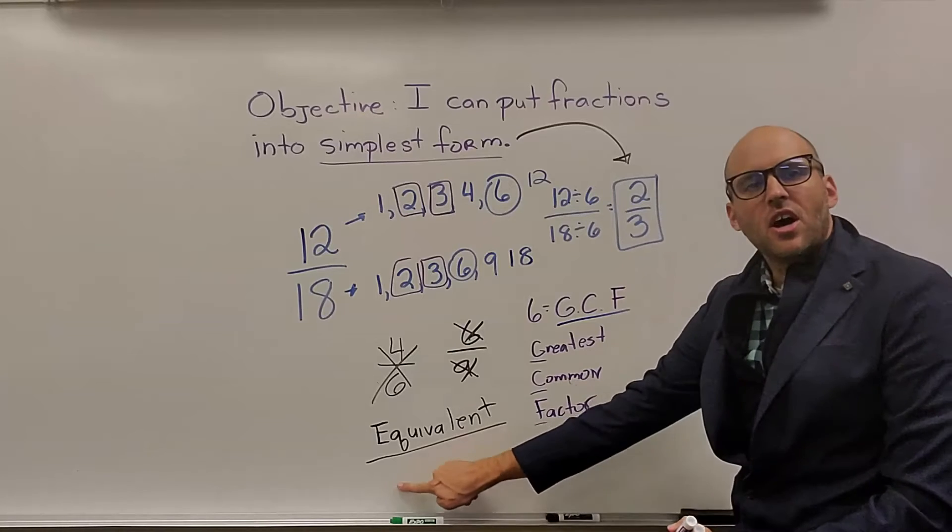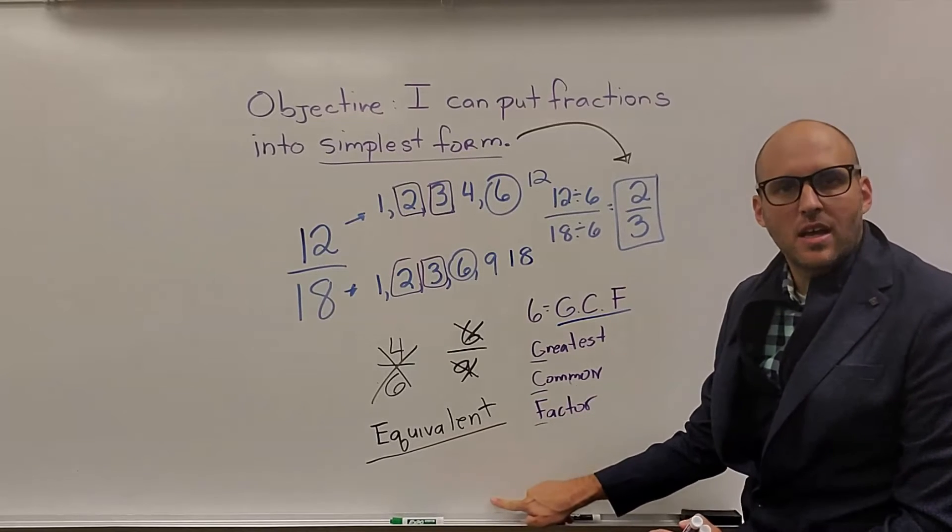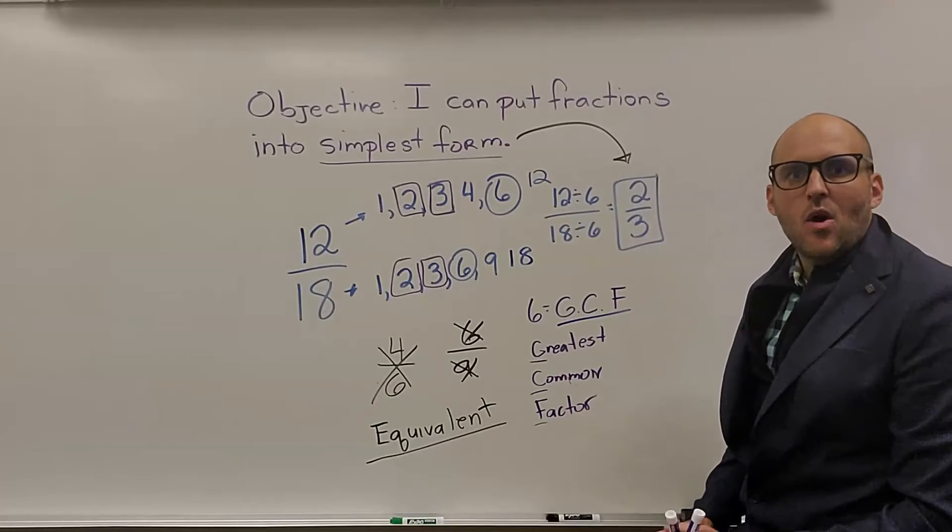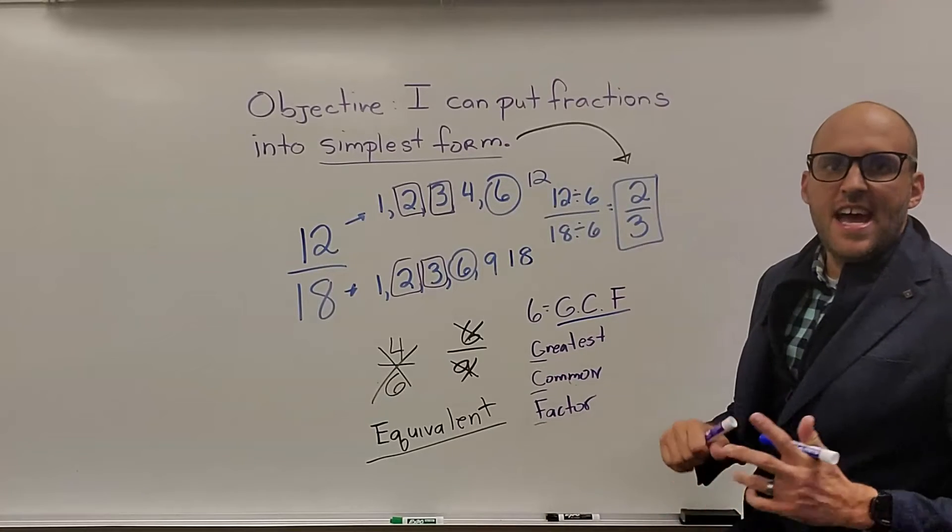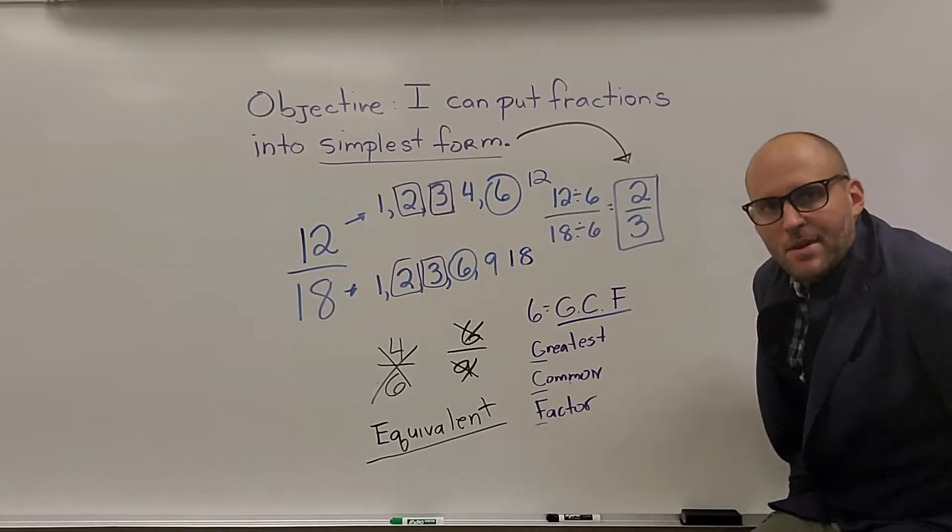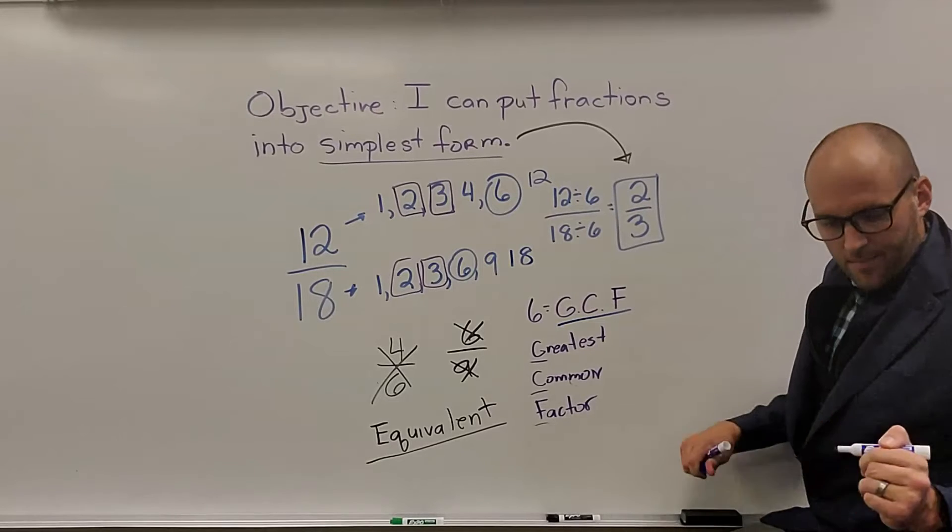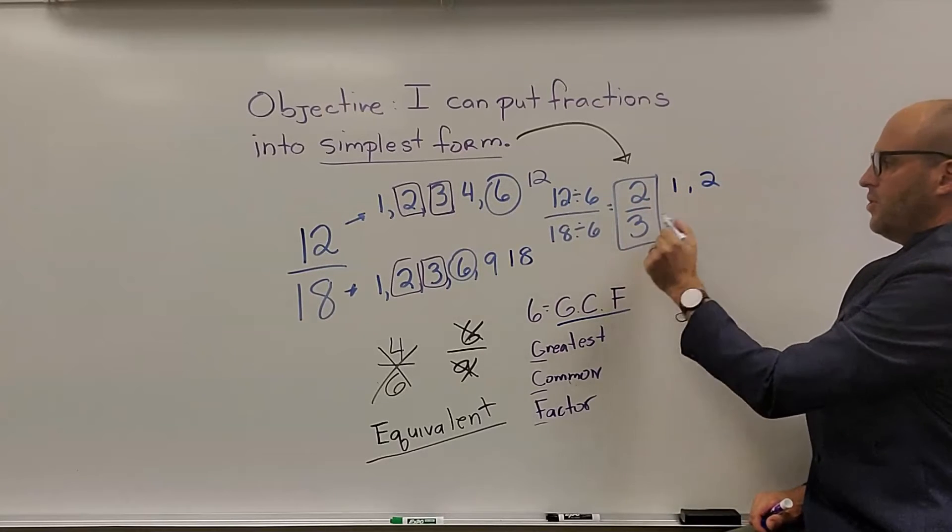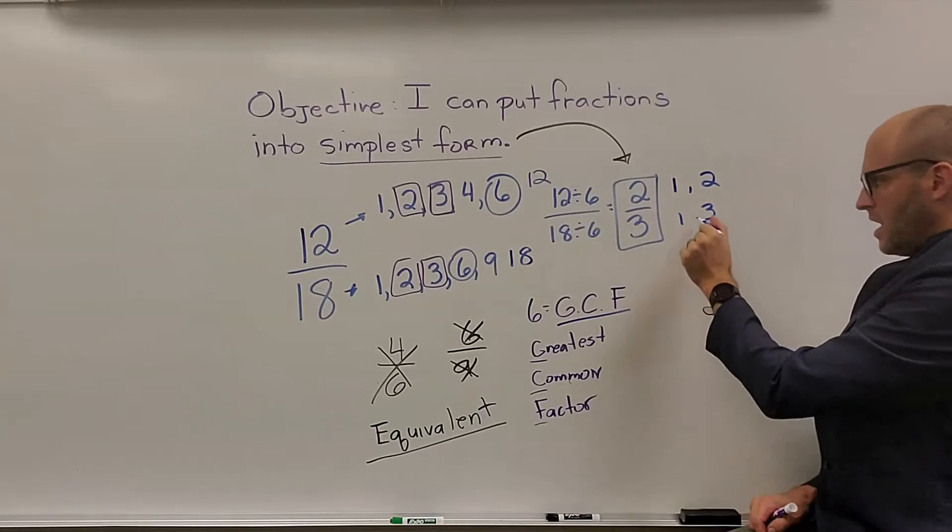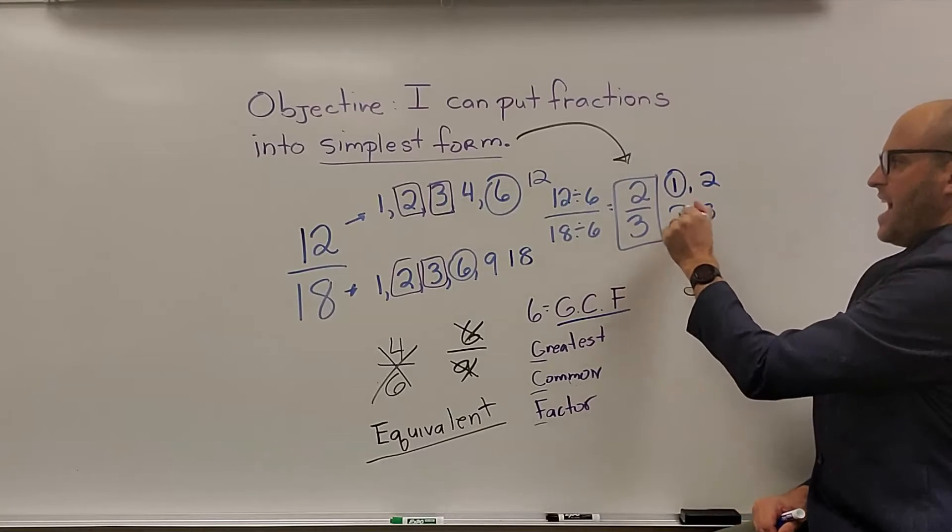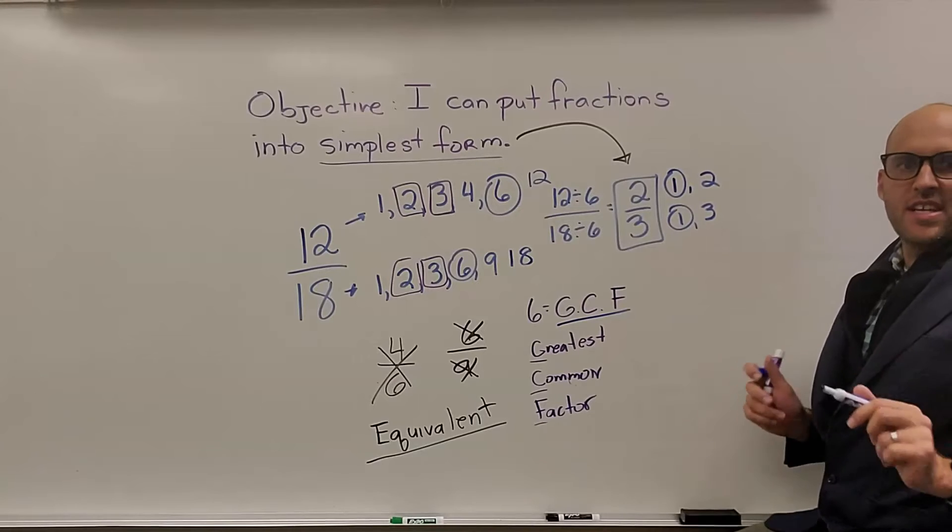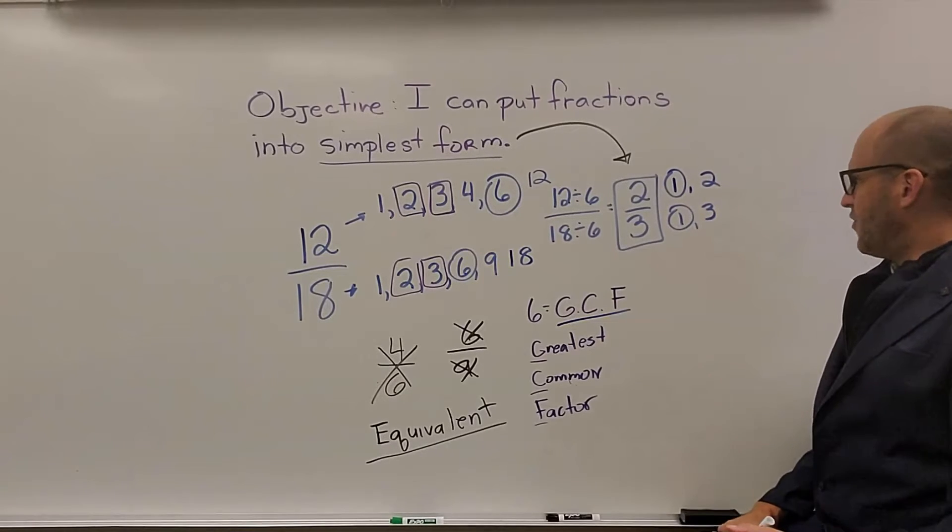Two-thirds is also an equivalent fraction, but it's also the smallest fraction we can make. What this means is these numbers now have nothing other in common with each other than 1. So if we go through this, the factors of 2 are 1 times 2. Here it's 1 times 3. Notice the only factor they have in common is 1. That's the only factor that you can have in common to be in simplest form.